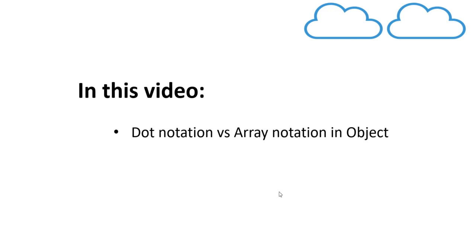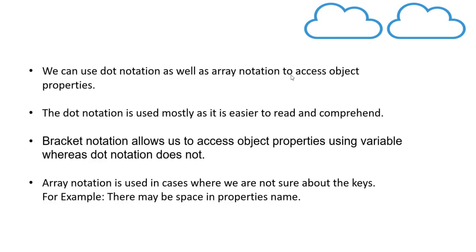We generally use dot notation as well as array notation to access the properties of objects. We can use either of them. Dot notation is mostly easier to read and comprehend — you just have to specify the object name, then dot, and the property name which you want to access.